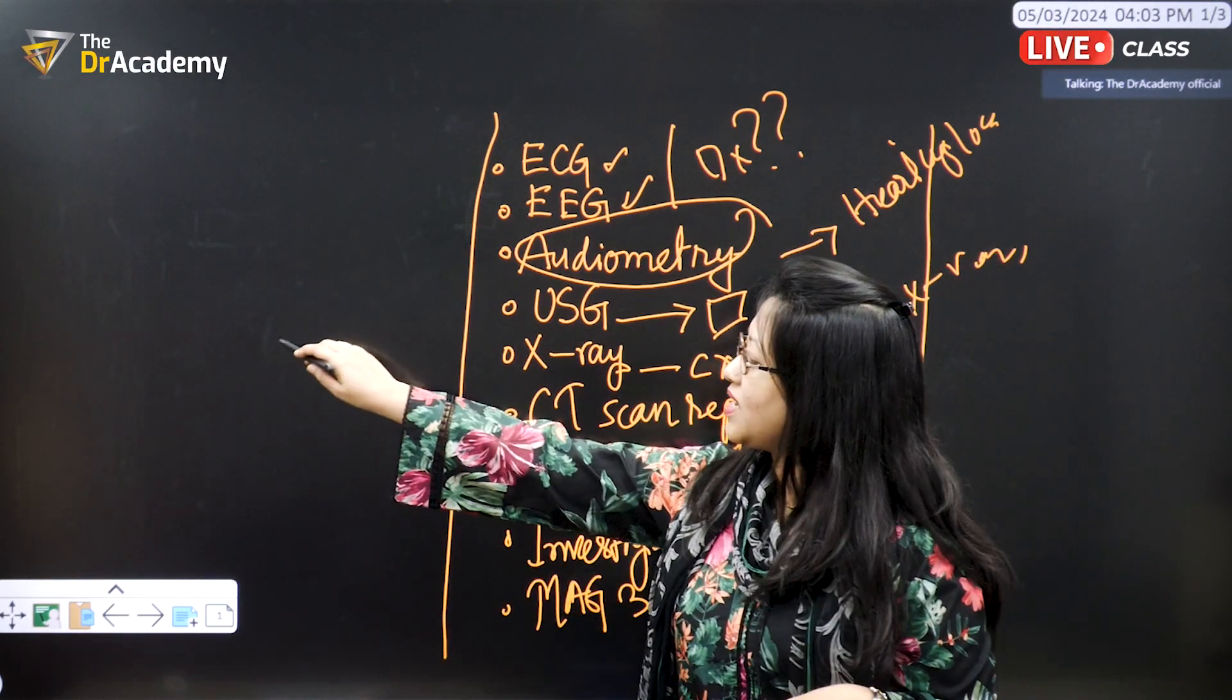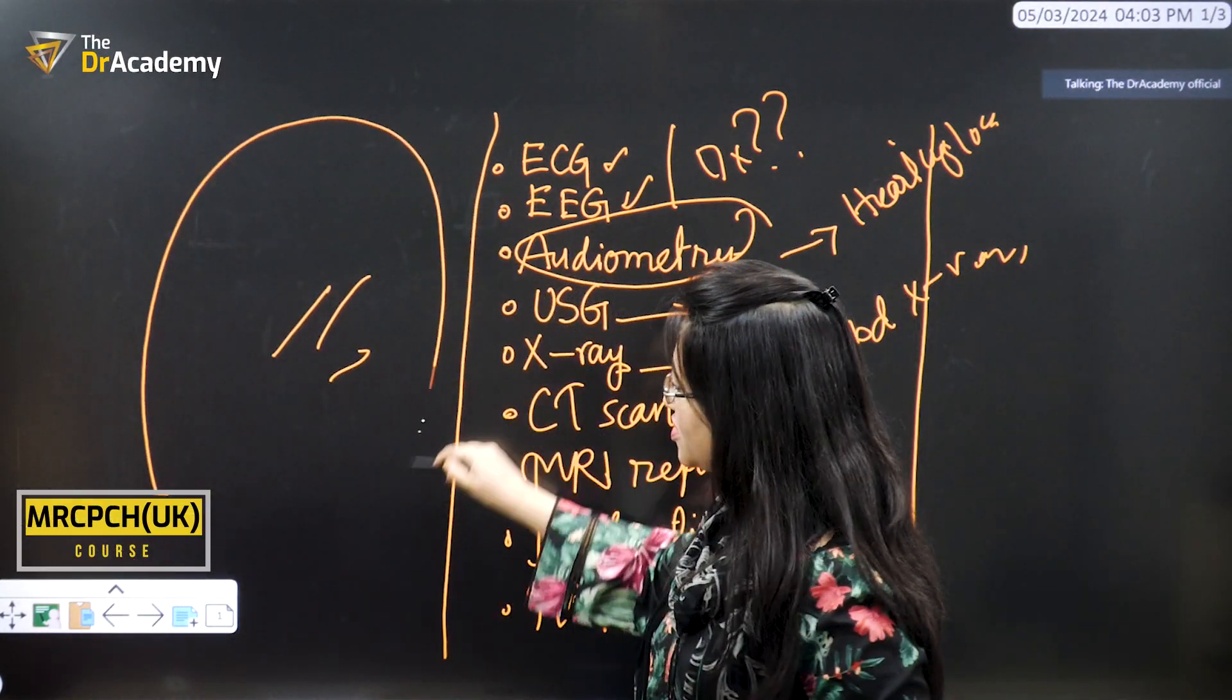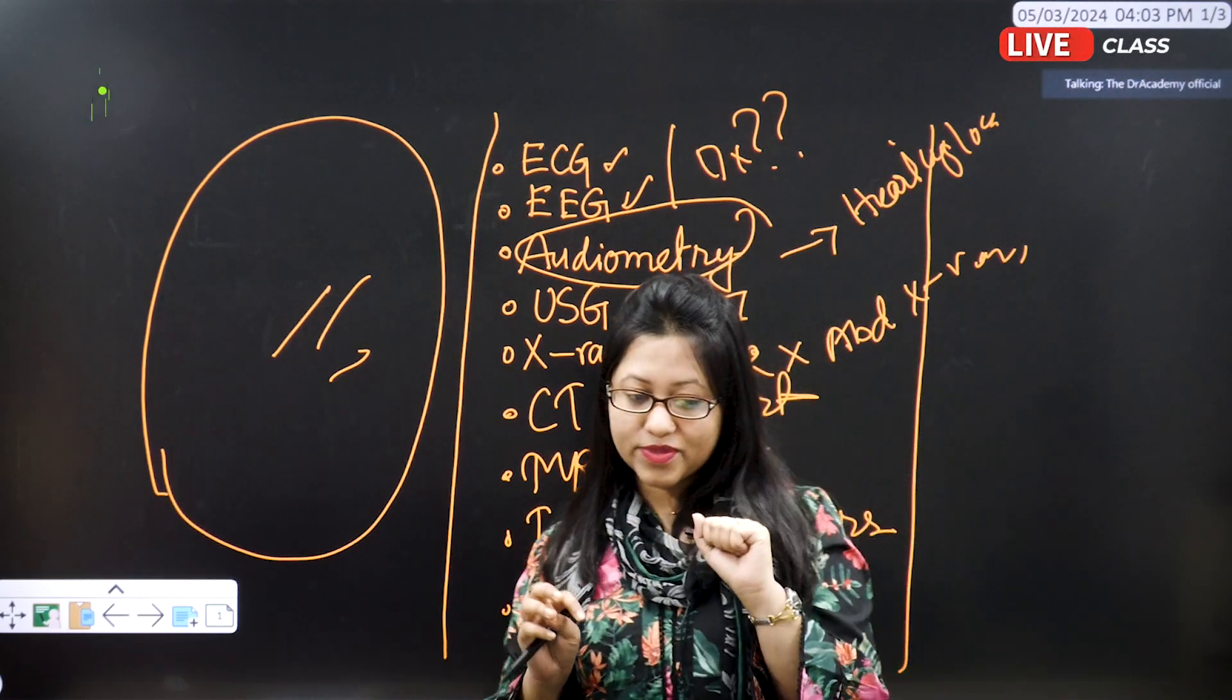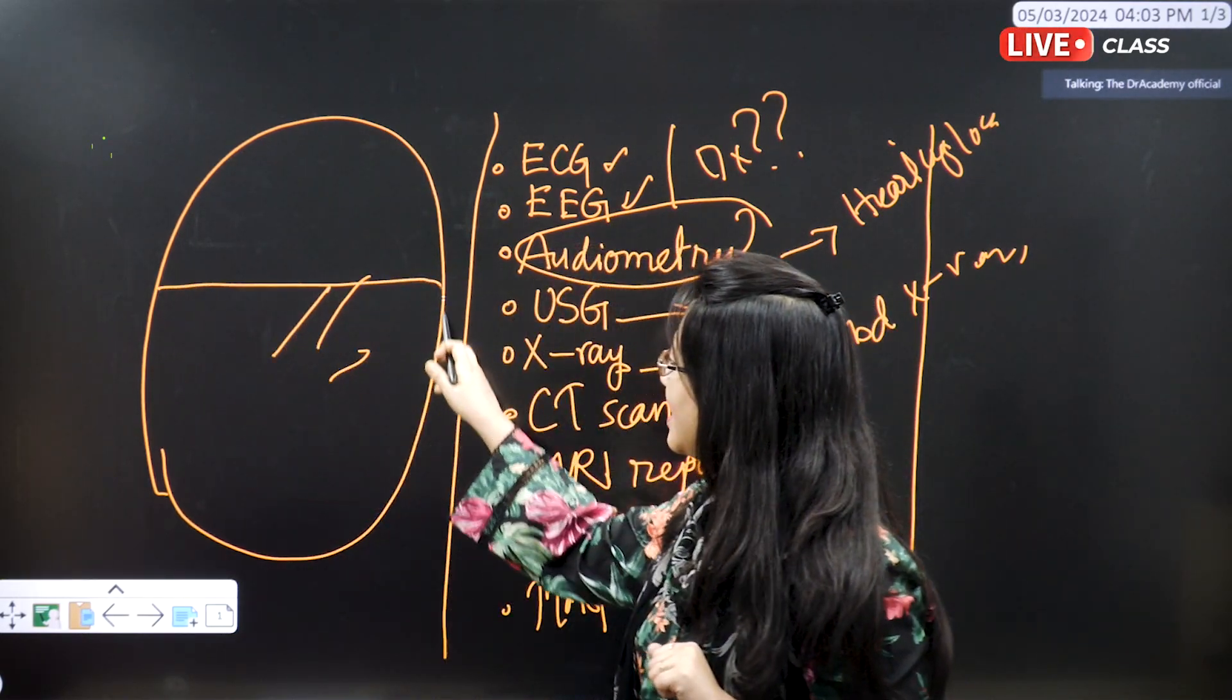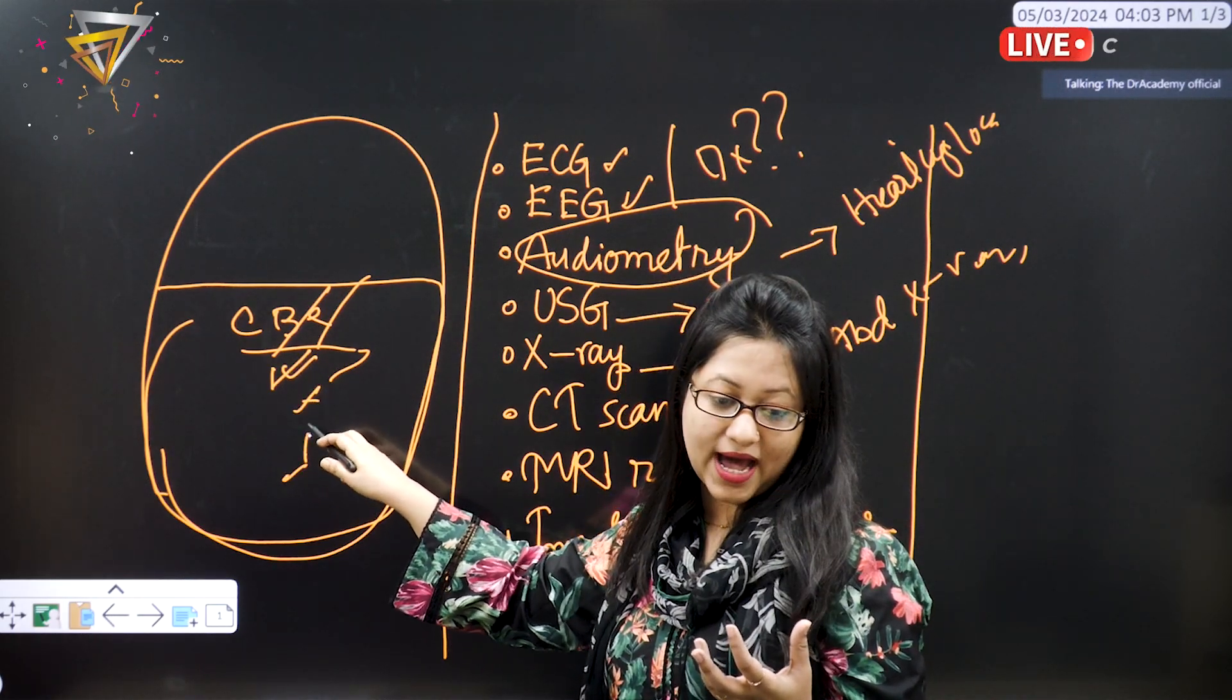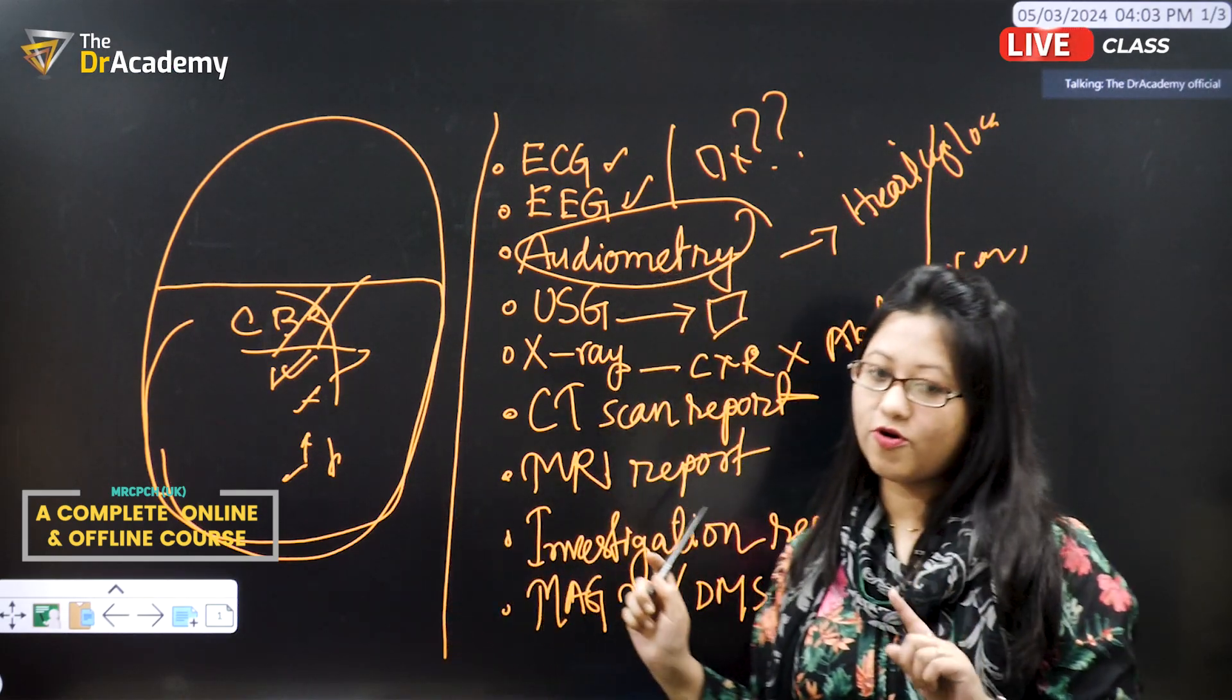Am I clear so far? There will be a clinical scenario like before and these will be extra and keep your mindset that in AKP, the question will comprise one page. In foundation of practice, the questions were small. The small questions there were and it was very easy to grab the answer from those. Whenever a question will be up to one page and half page will be the investigation report, maybe the entire CBC has been given. Some of the findings were normal, some of the findings will be higher or lower. By looking at the investigation and these pictures, you have to diagnose.